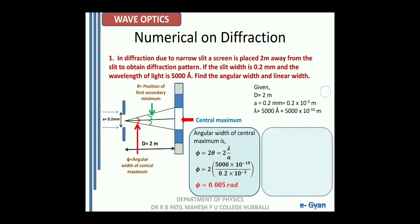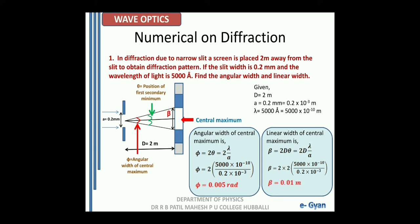Similarly, the linear width of the central maximum is beta = 2 × D × lambda / a = 2 × 2 × 5000 × 10⁻¹⁰ / (0.2 × 10⁻³). On calculation we get the linear width beta = 0.1 meter.